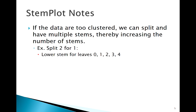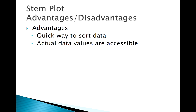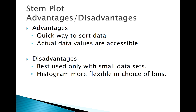As we saw in that last example, each stem was split into a lower and upper stem. Back-to-back stem plots are a really nice comparison tool — if we have similar data sets we can sort them out with the same stems and compare them side by side. Overall, stem-and-leaf plots quickly sort data and let you see each individual data point. The disadvantages are that they get pretty messy with large data sets, and there's not a ton of flexibility in how you split the stems.